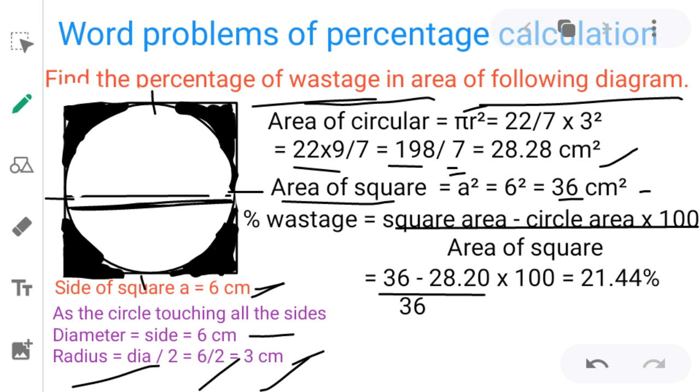So we have to find the percentage of wastage. For that we need the formula: percentage of wastage equals (square area - circle area) divided by area of square into 100.